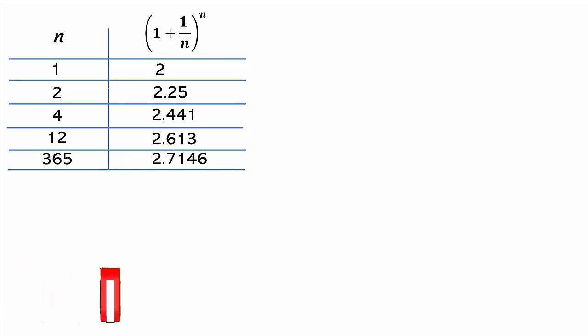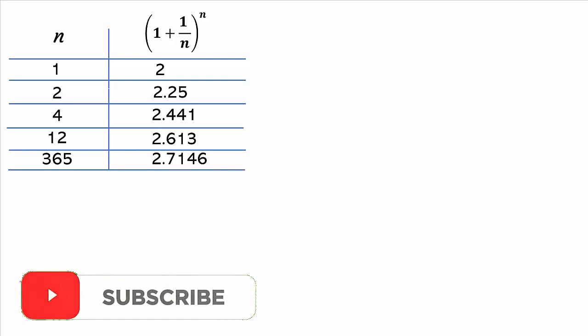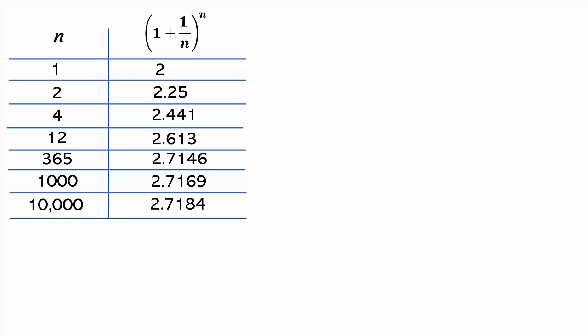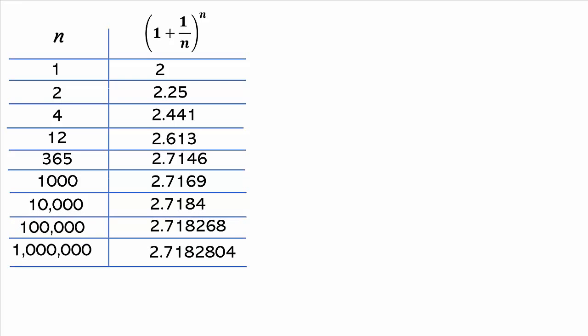Still higher than what we obtained when n was equal to 4. By dividing the time into 365 days, we get the growth is 2.7146, still higher than the previous one. Making n equal to 1000, we get a slightly higher value, which is 2.7169. Look at all the tabulated values; it seems the value is converging to 2.7182.